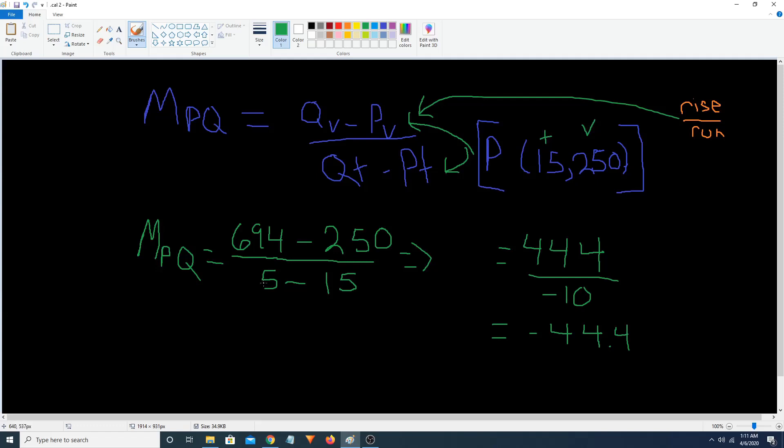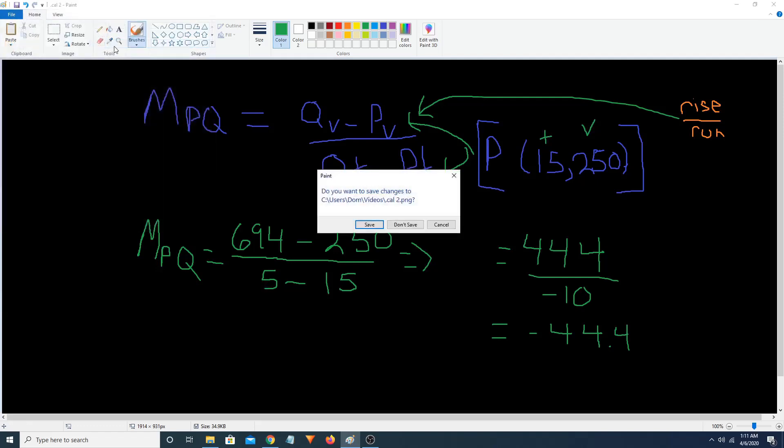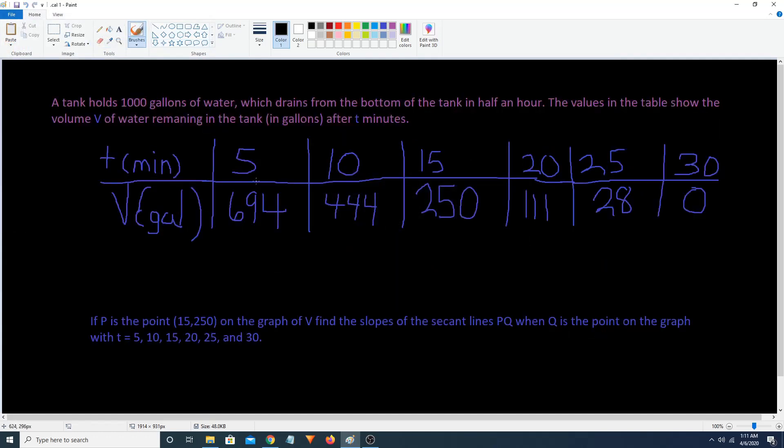And we're going to subtract this with that because with the chart. From the chart we have 5 and 694 in time, volume, gallons.